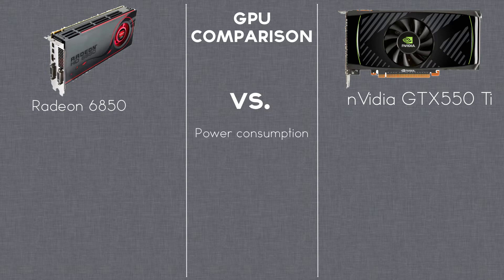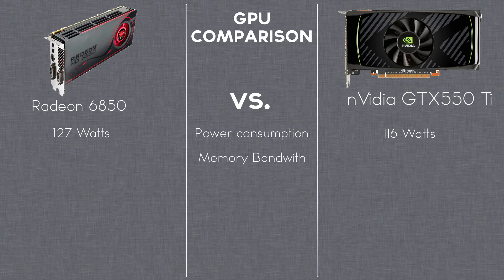The power consumption of the GTX 550 Ti is 116 watts, and the 6850 is 127 watts. So the GTX 550 Ti wins this with 9%. In memory bandwidth, the 6850 is theoretically 30% faster.